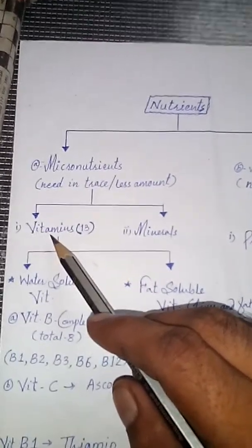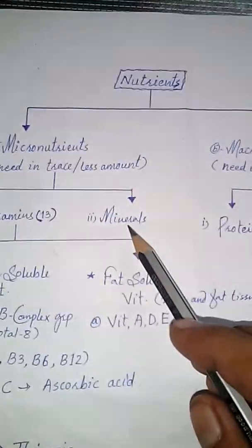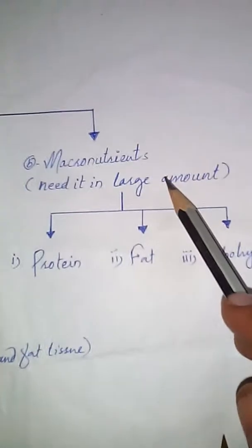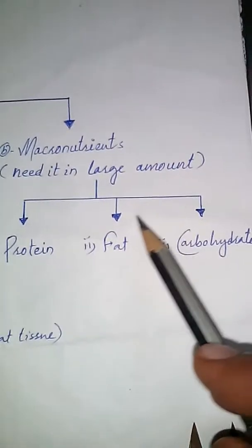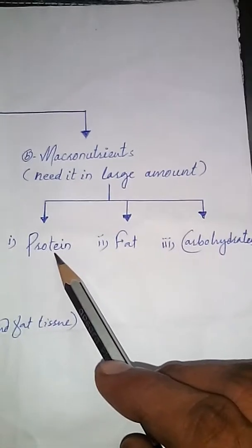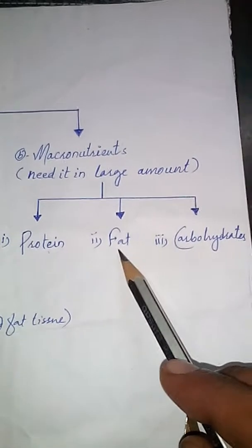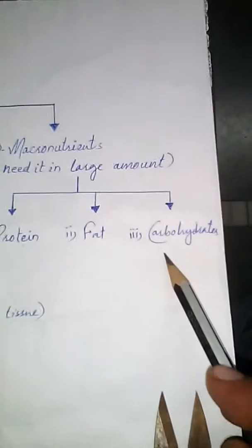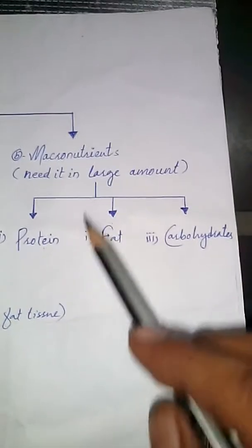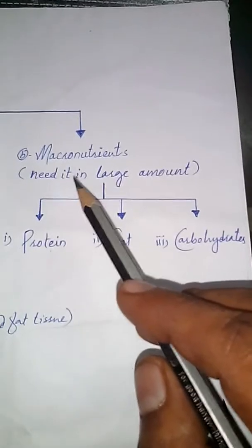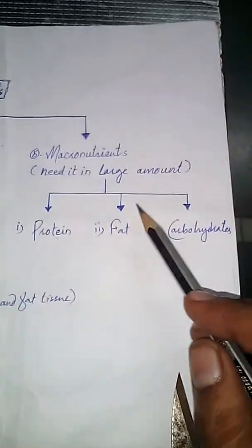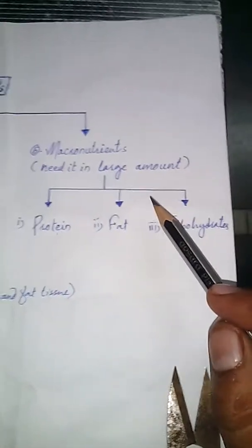Type number one: vitamins, and type number two: minerals. While the macronutrients, which are required in a large amount, are again divided into three types — number one: protein, number two: fat, number three: carbohydrate. So these three nutrients are examples of macronutrients which we need in a large amount and we get from our diet.